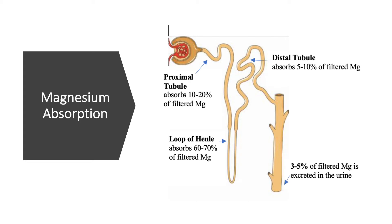A unique feature of magnesium concerns filtered magnesium reabsorption. Only 10 to 20% is reabsorbed in the proximal tubule. 60 to 70% is reabsorbed in the loop of Henle, specifically the thick ascending loop. Magnesium is the only cation with this characteristic — it does not apply to calcium, sodium, or potassium. Usually, about 60–70% of reabsorption happens in the proximal tubule, but not for magnesium. The distal tubule absorbs 5 to 10%, and 3 to 5% is excreted into the urine.